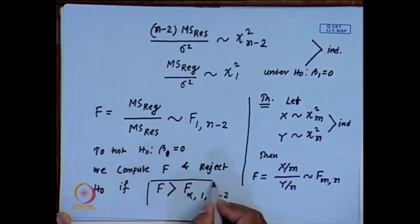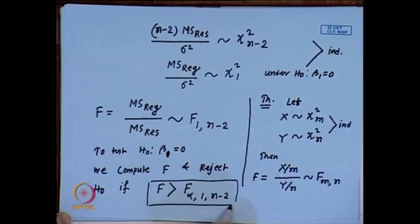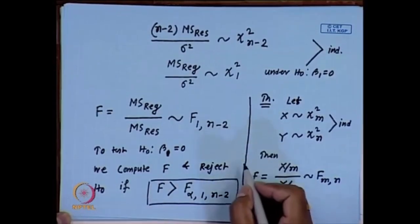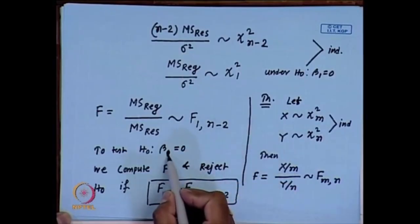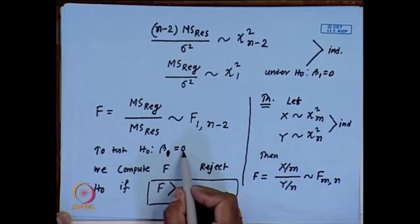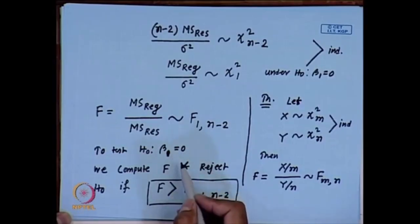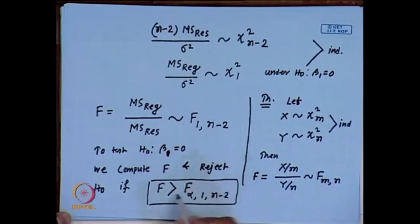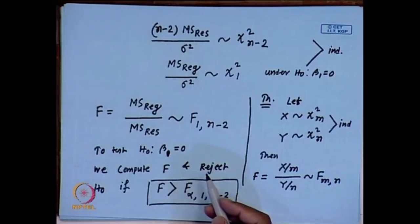From this we can say: to test the hypothesis H₀: β₁ = 0, we compute F and reject H₀ if F > F_{α, 1, n−2}. This is another approach to test the hypothesis β₁ = 0. The same test can be done using the t-distribution; basically these two approaches are equivalent, and I am going to prove that.